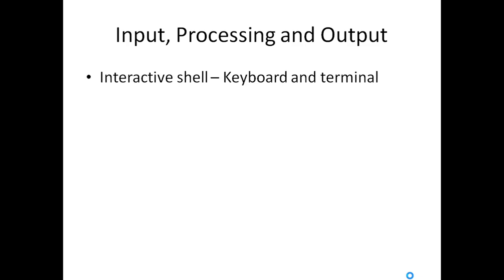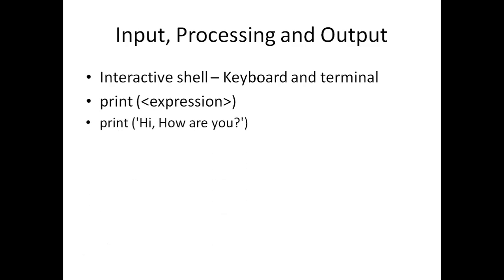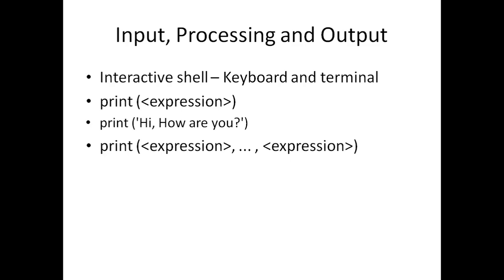Next, how to do processing and output in Python. In the interactive shell, the input device is the keyboard and the output is the terminal. The print function syntax is: 'print(something)' where everything inside the brackets is the expression to display. For example, 'print("Hi, how are you")' will display that in the interactive shell. If you want to include more expressions, you separate them with commas — any number of expressions can be included.